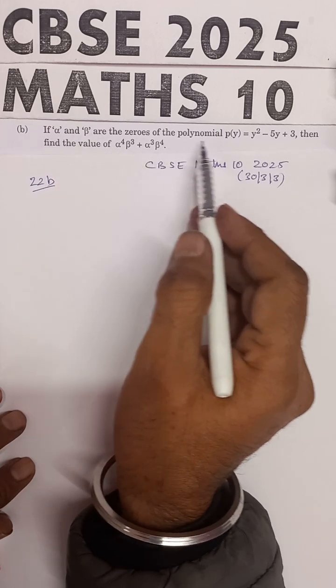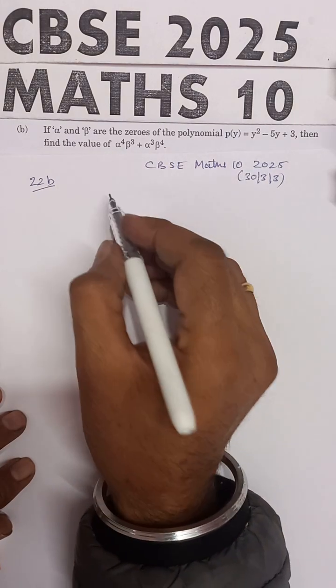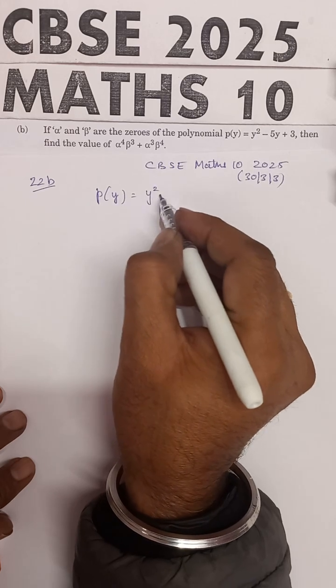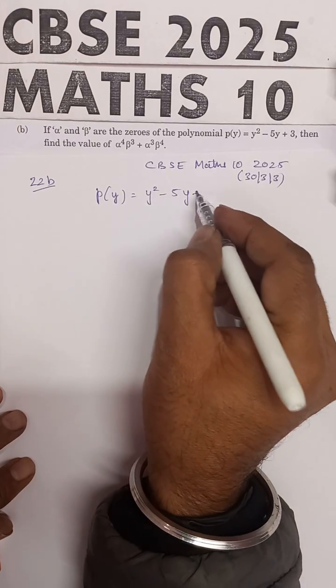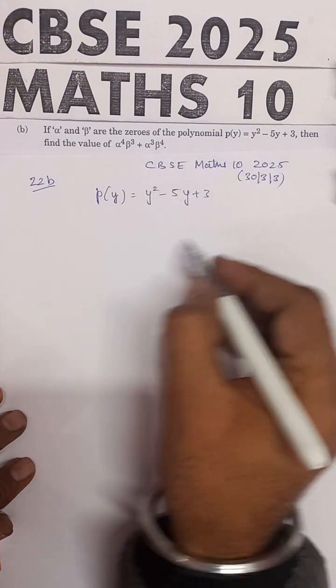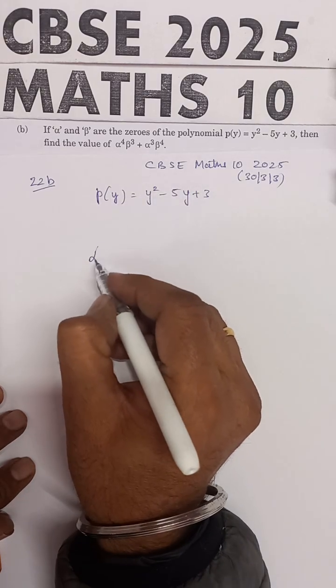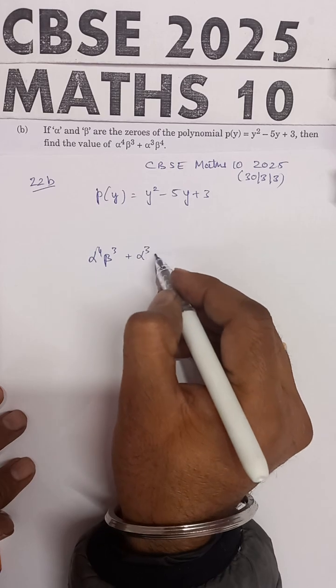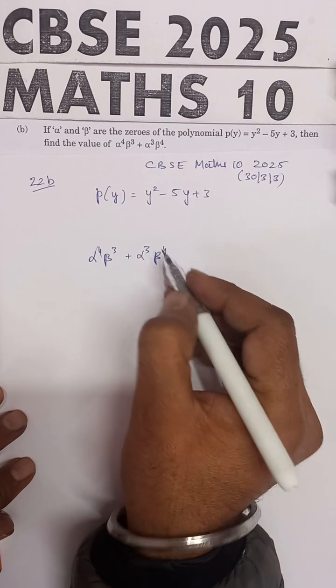If alpha and beta are the zeros of the polynomial P(Y) = Y² - 5Y + 3, then find the value of α⁴β³ + α³β⁴.